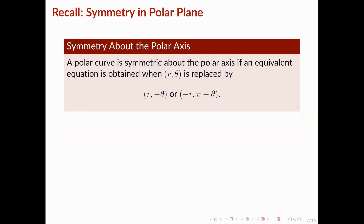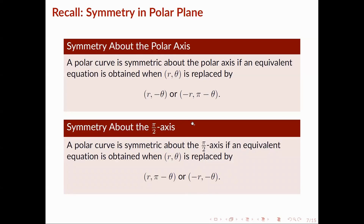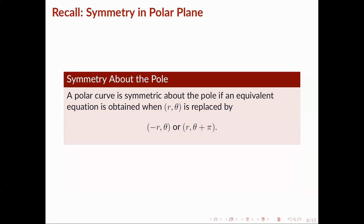We also recall some symmetry in the polar plane. For symmetry about the polar axis: a polar curve is symmetric about the polar axis if an equivalent equation is obtained when (r, theta) is replaced by (r, -theta) or (-r, pi - theta). For symmetry about the pi/2 axis: a polar curve is symmetric about the pi/2 axis if an equivalent equation is obtained when (r, theta) is replaced by (r, pi - theta) or (-r, -theta). For symmetry about the pole: a polar curve is symmetric about the pole if an equivalent equation is obtained when (r, theta) is replaced by (-r, theta) or (r, theta + pi).